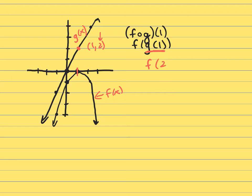So now I need to find f of 2. Get on your f graph and say, where is x equals 2? What is the y value? The y value is 1. That ordered pair there is (2, 1). So f of 2 is 1.